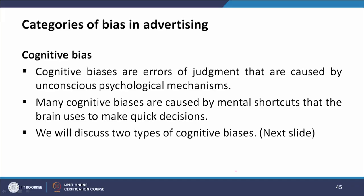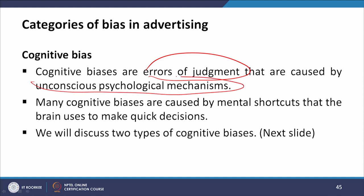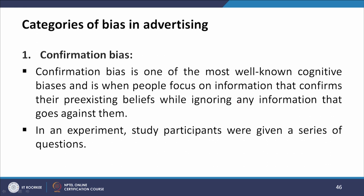Yet another type of bias is cognitive bias. Cognitive biases are errors of judgment caused by unconscious psychological mechanisms. Many cognitive biases are caused by mental shortcuts that the brain uses to make quick decisions. We will discuss two types of cognitive biases. The first is confirmation bias — one of the most well-known cognitive biases — which is when people focus on information that confirms their pre-existing beliefs while ignoring any information that goes against them.